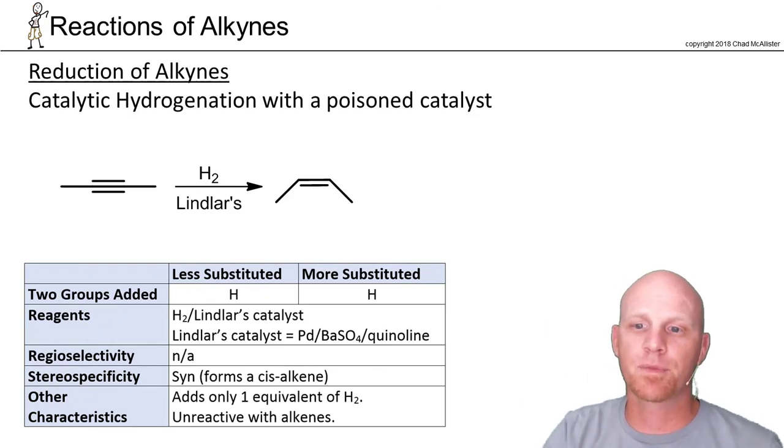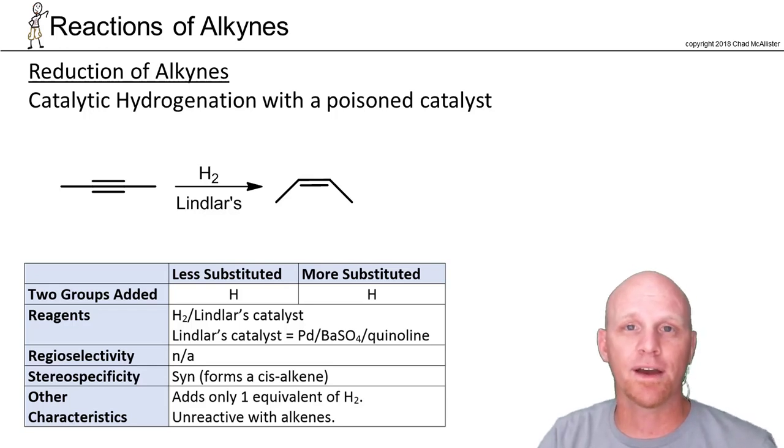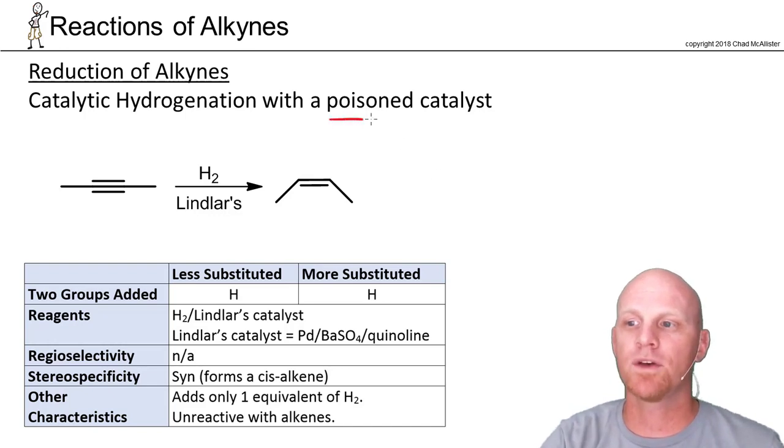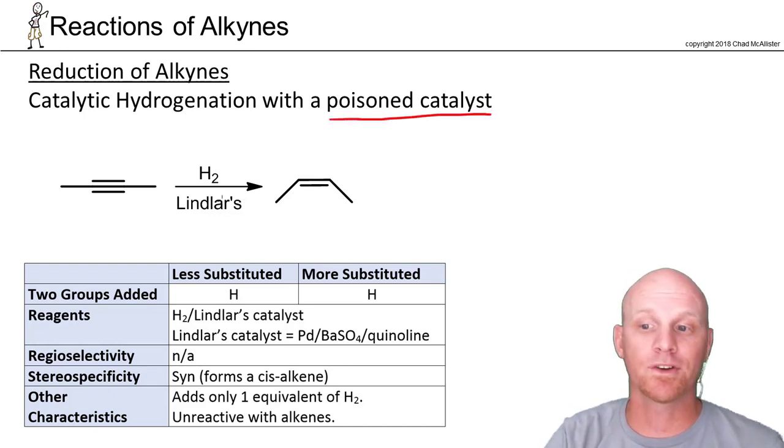If you want to add only one equivalent of hydrogen, you can't just say I'm adding one equivalent. What you can do is poison your catalyst. There are a variety of poisoned catalysts, but the one you're most likely to see is called Lindlar's catalyst.